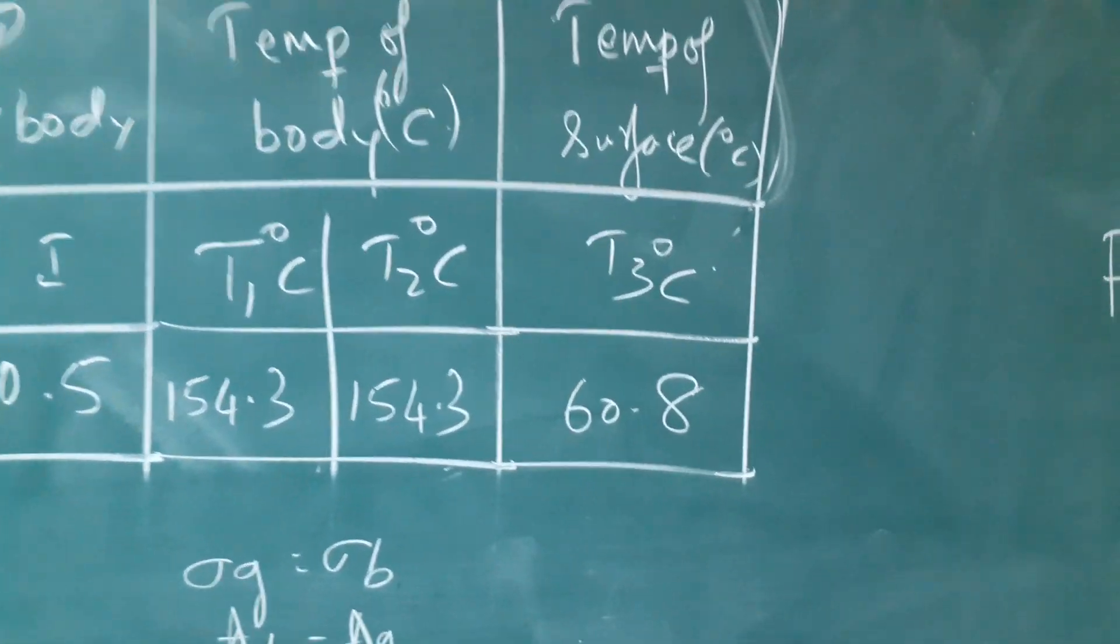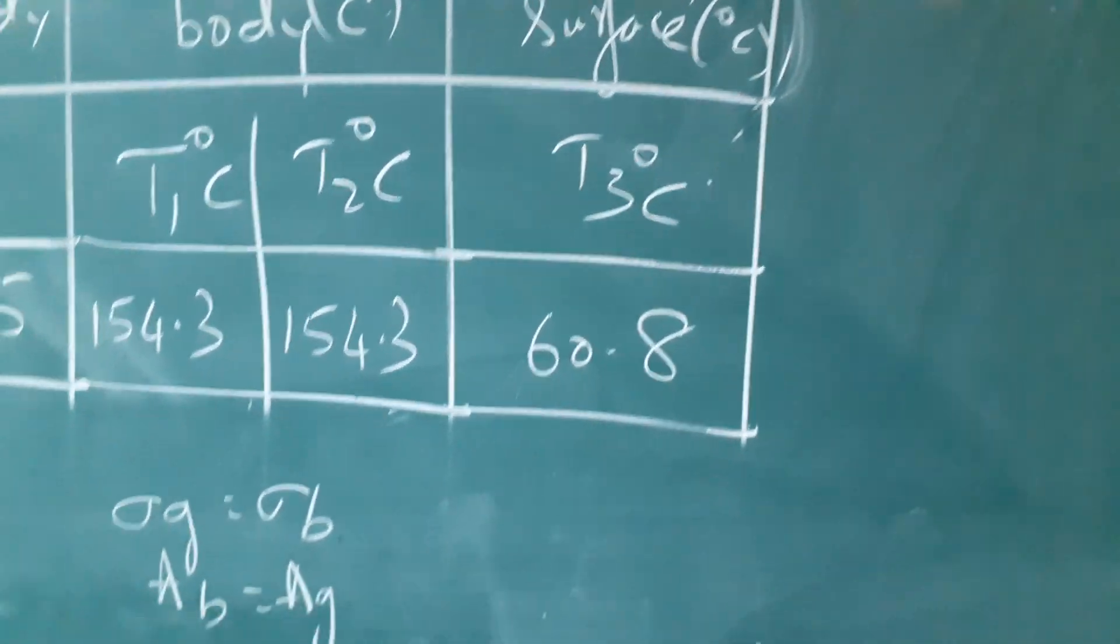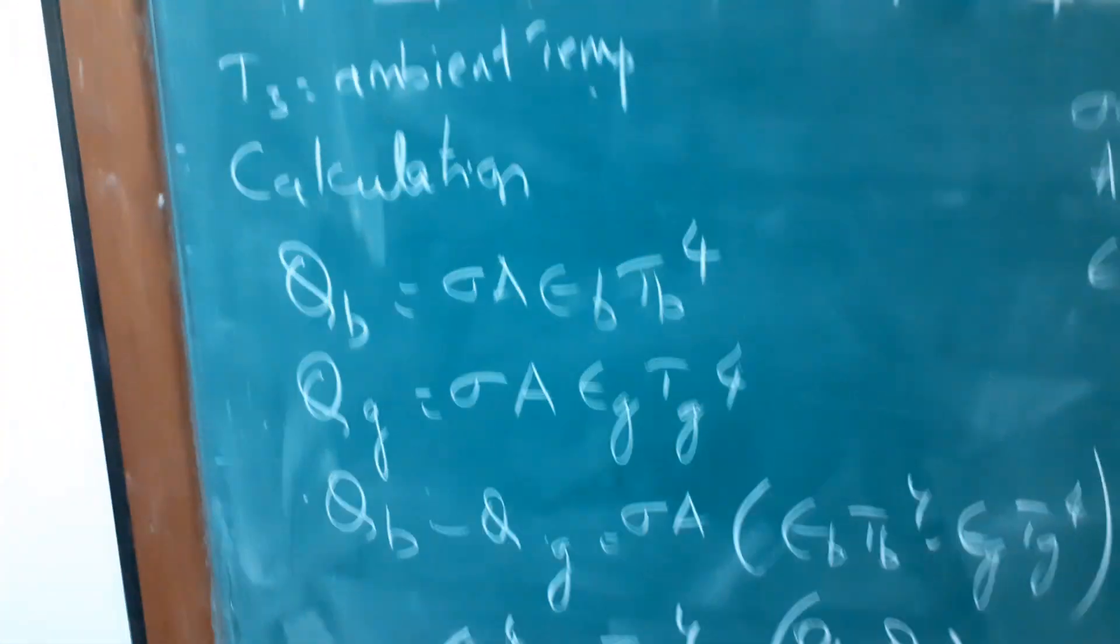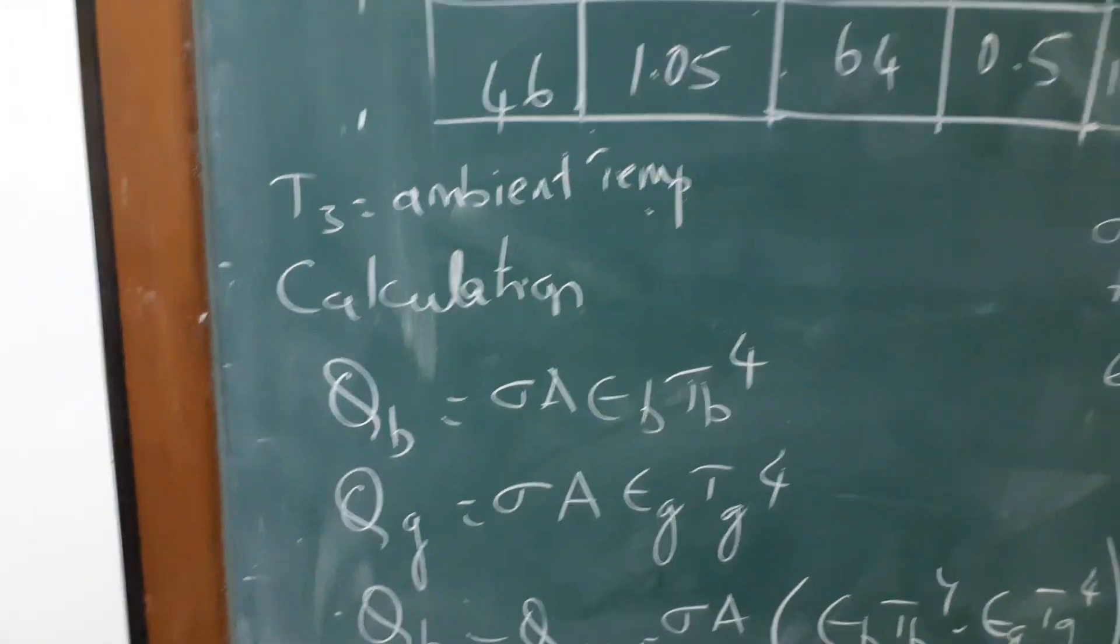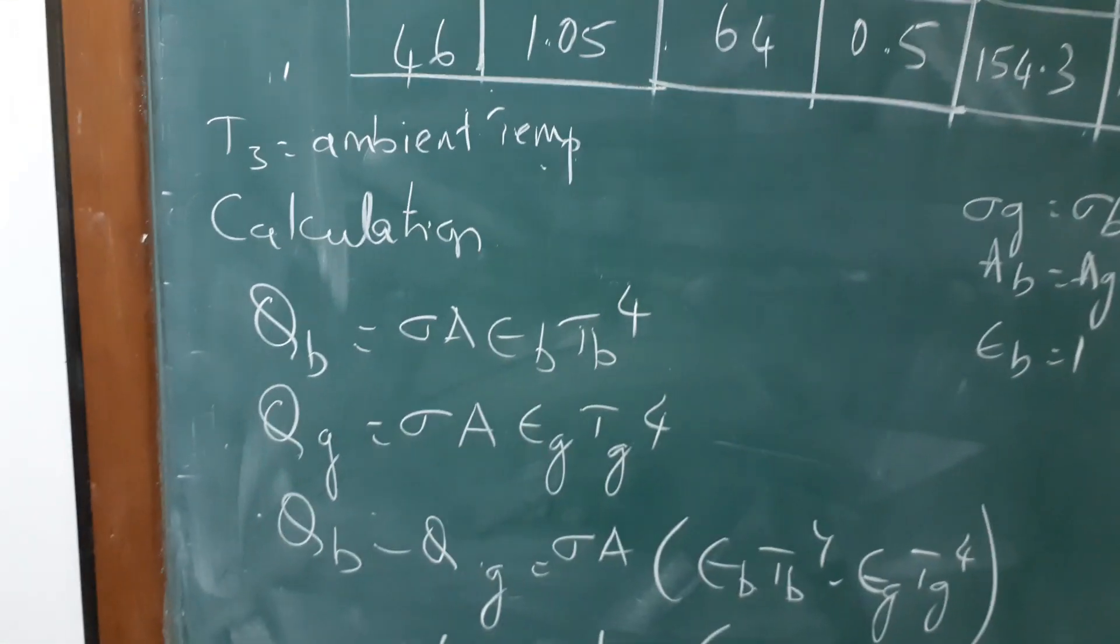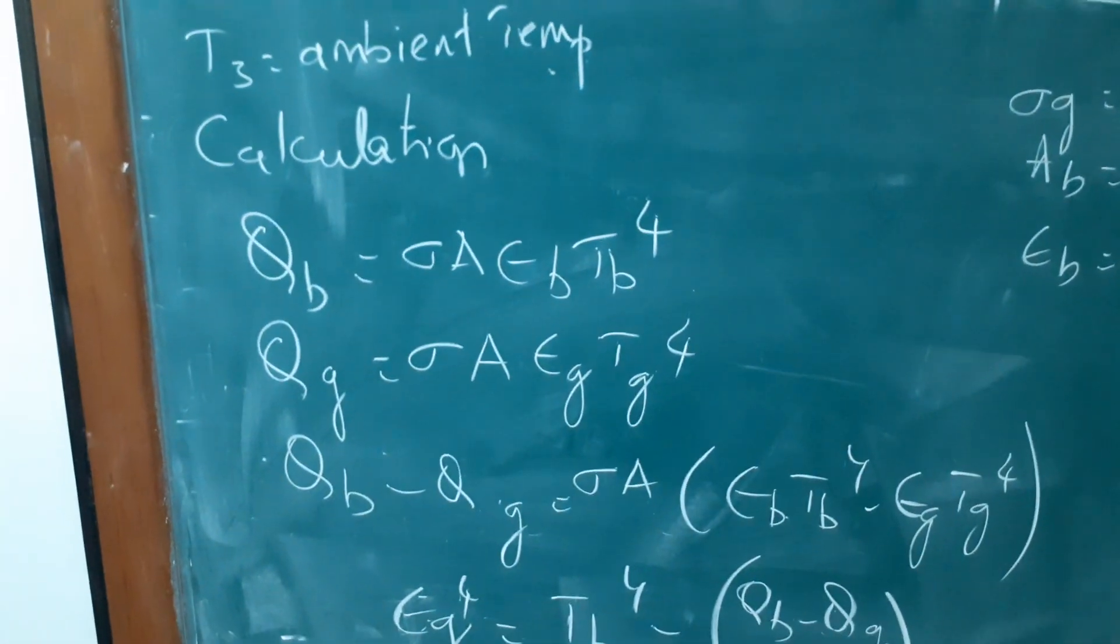T3 is the ambient temperature, I have got 60.8. Now with these readings, I will do the calculation. T3 is ambient temperature equal to 60.8. Now in the calculation, use the Stefan-Boltzmann law, that is the radiation law.